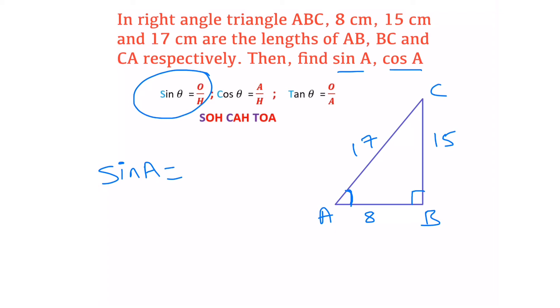The formula for sine theta is opposite by hypotenuse. The side opposite to angle A is 15 divided by hypotenuse 17. So sine A = 15/17. Now we have to find cos A.